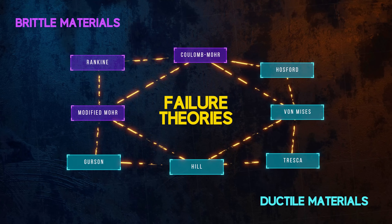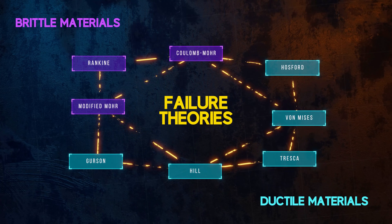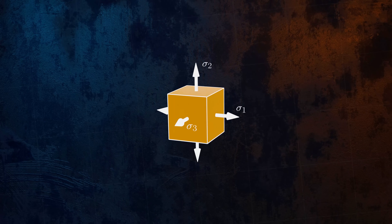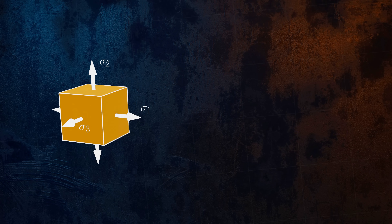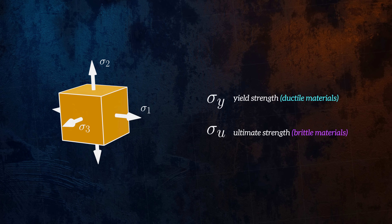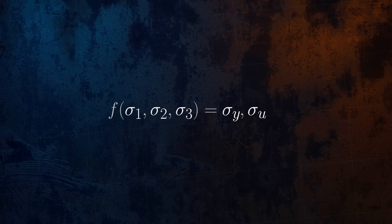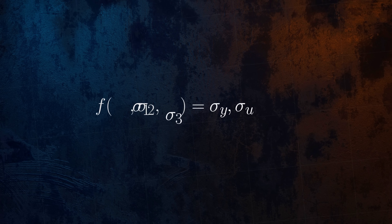So what does a failure theory do? It's quite simple. It allows us to predict failure of a material by comparing the stress state in the object we are assessing with material properties that are easy to determine, like the yield or ultimate strengths obtained by performing a uniaxial test. The stress state at a point can be described using the three principal stresses, so most failure theories are defined as a function of the principal stresses and the material strength. Probably the simplest failure theory is to say that failure occurs when the maximum or minimum principal stresses reach the yield or ultimate strengths of the material.